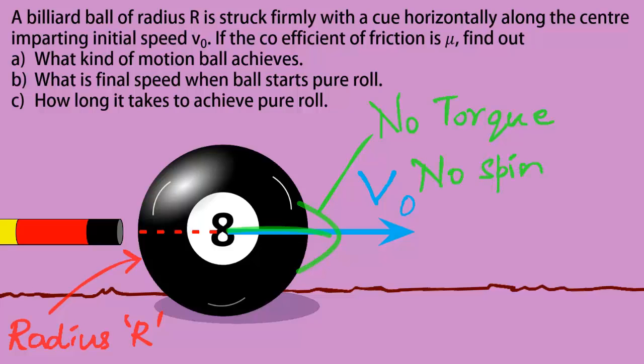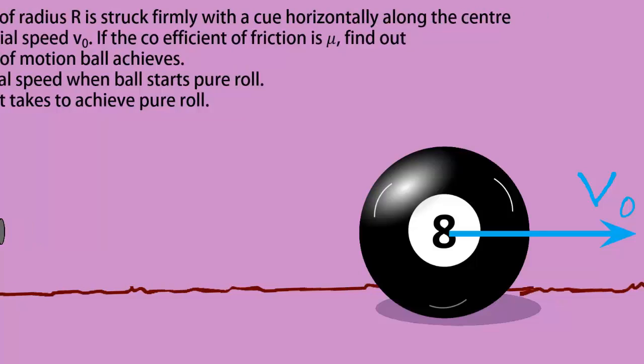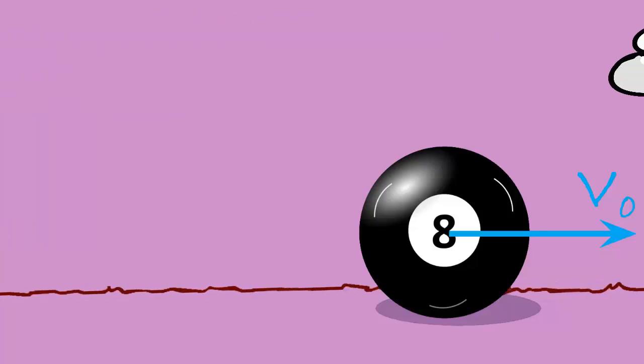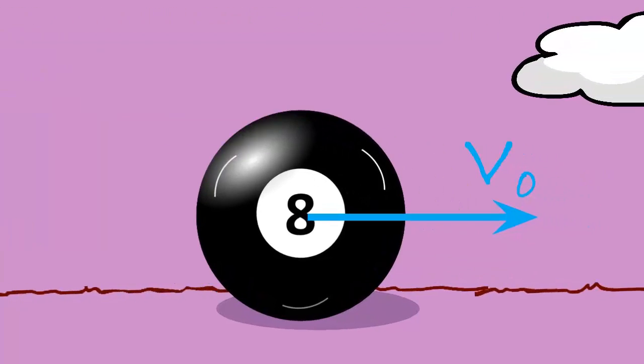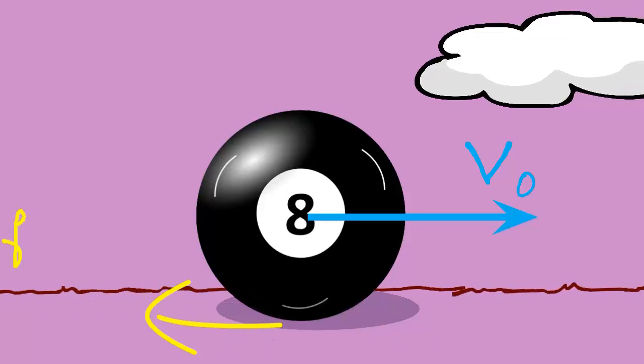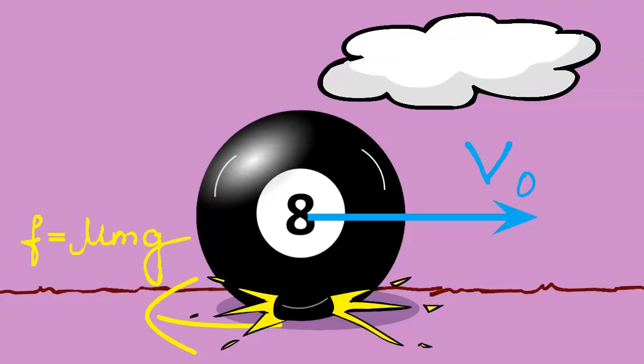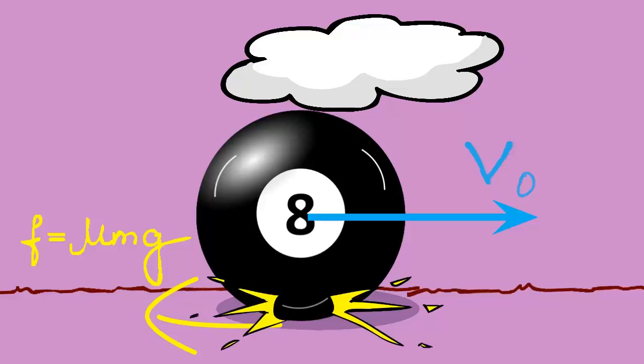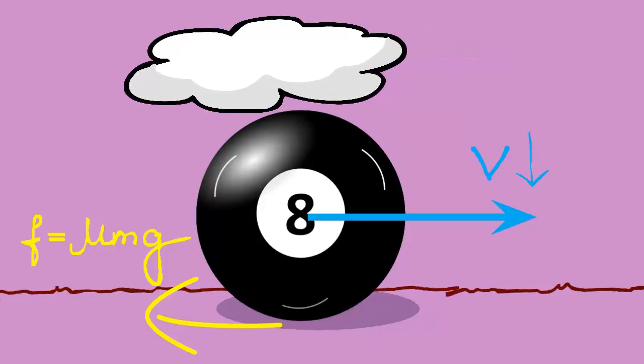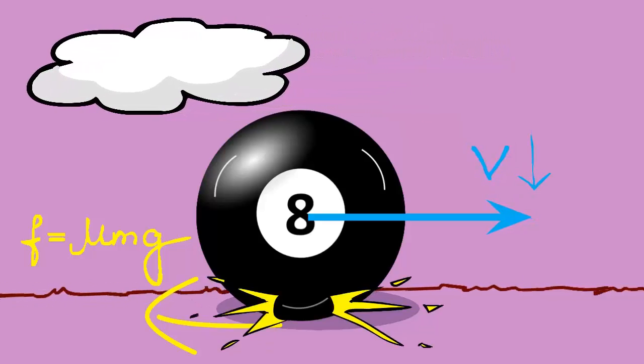That means initially the ball just starts sliding with the speed v0. But as the ball starts sliding, kinetic friction starts applying brakes, producing heat or in our case these deadly sparks, and speed starts reducing. But do you know what else it does?